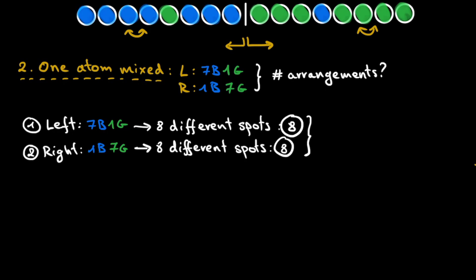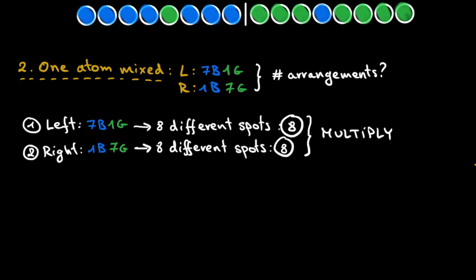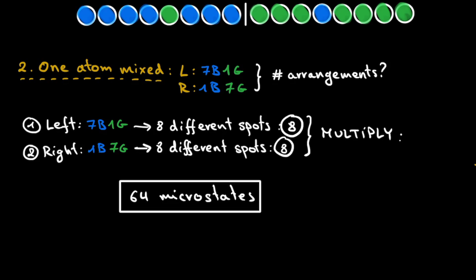Now we bring the two sides together by multiplying the number of different arrangements on the left hand side with the number on the right hand side. For each position the green atom takes on the left, the blue atom on the right can have its 8 different positions. That's why we multiply: 8 arrangements on the left times 8 arrangements on the right. Since 8 times 8 is 64, in this scenario with just one odd-colored atom on each side, we have 64 microstates for this slightly mixed macrostate.